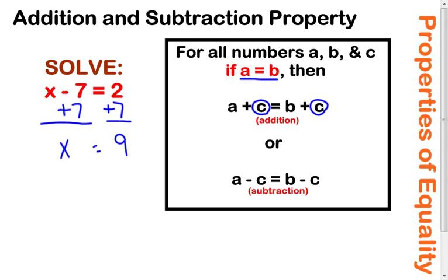Now, the subtraction property is the exact same thing, just you're going to subtract a number instead of add it. So if we add something to both sides, call it the addition property of equality. If you subtract something from both sides, call it the subtraction property of equality.